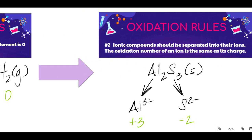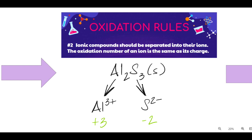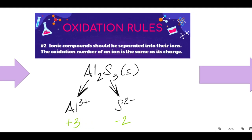Let's go to oxidation rule number two. If you have an ionic compound in your equation, you should separate it into its respective ions. And the oxidation number of the ion is the same as its charge. So for aluminum sulfide, I break up the ions. I see aluminum is three plus, so its oxidation number is plus three. And the sulfur is minus two, so its oxidation number is minus two as well.